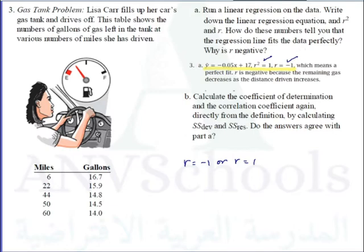Why is r negative 1? The number of gallons of gas left in the fuel tank is decreasing as Lisa drives more miles. As she drives more, the gallons decrease. Therefore the function should be negative — the number of gallons is not increasing. R is negative because the remaining gas decreases as the distance driven increases.